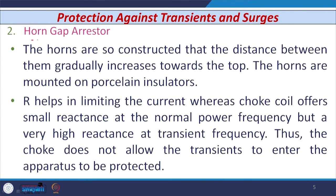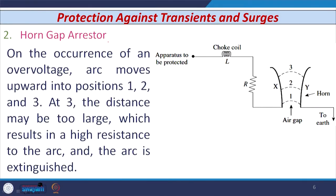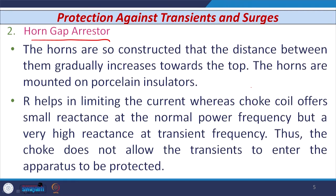The second type is the horn gap arrester. As the name suggests, it contains horns constructed so that the distance between the horns gradually increases towards the top. The horns are usually mounted on porcelain insulators. In the circuit, the apparatus to be protected is connected at one point and the other point is earth. A choke coil and a resistor R are also connected. The resistor R acts as a current-limiting resistor, while the choke coil offers small reactance at normal power frequency but very high reactance at transient frequencies.